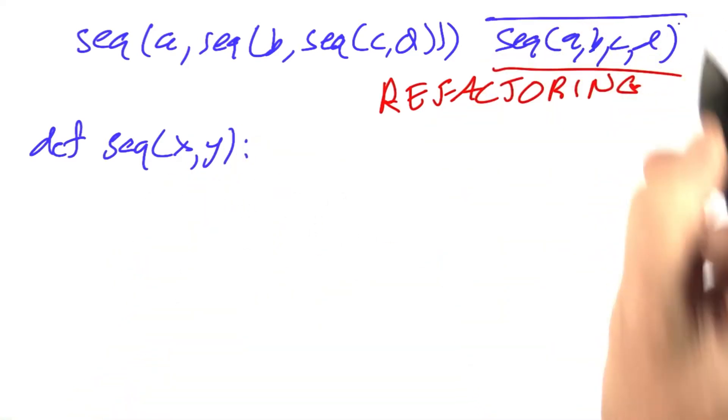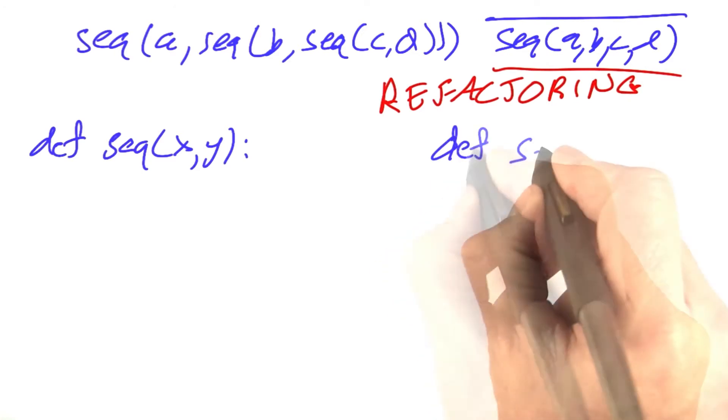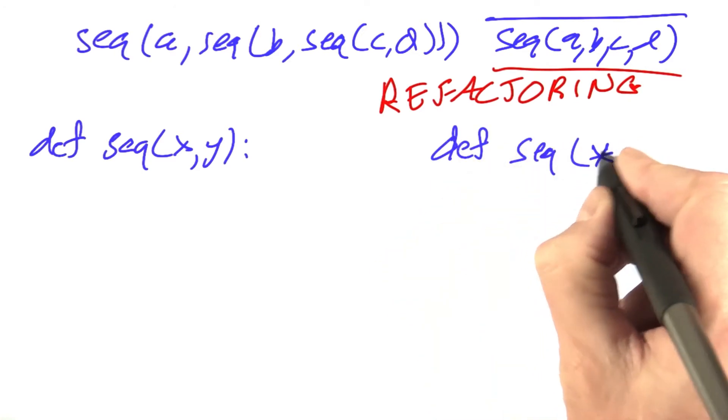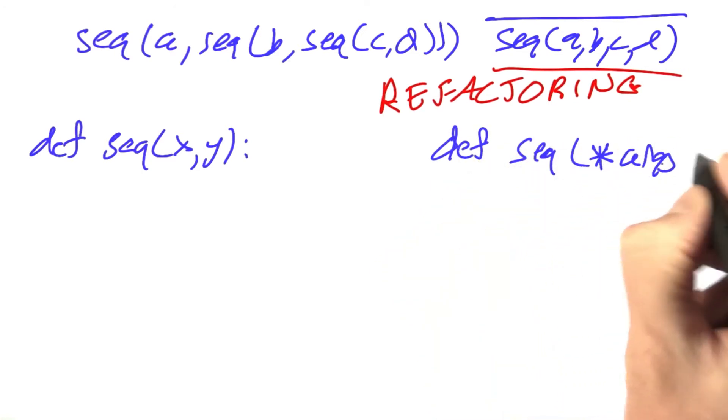If I had done it like this, and I had to define sequence of an arbitrary number of arguments, then the definition of sequence would have been more complex. It's understandable that I did this.